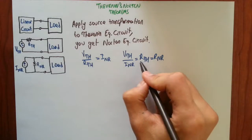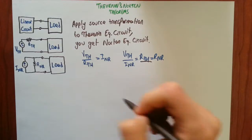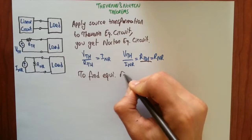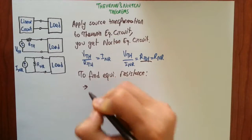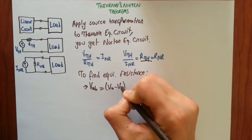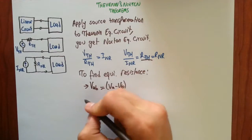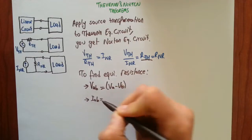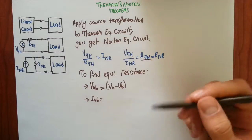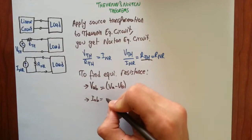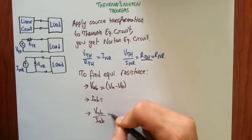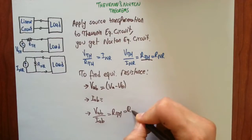Now I will write down another method to find R_Thevenin. To find equivalent resistance: firstly, find V_AB, which is the open circuit voltage between terminals A and B. Then find I_AB, which is the short circuit current that flows from A to B. Lastly, divide V_AB by I_AB to find R_Thevenin, or R_Norton — it doesn't matter, they are equal.